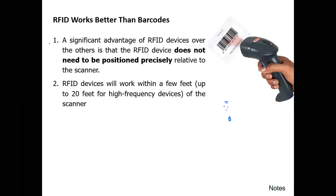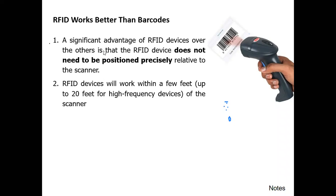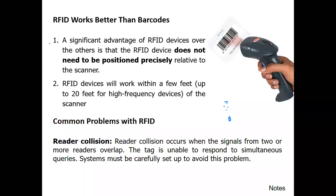RFID is better than a barcode. You know what a barcode is — parallel lines in black and white with different thicknesses, read by a barcode reader encoded with some information. RFID is better than barcode because barcode needs a line of sight — the reader and barcode must face each other. But with RFID we don't need a line of sight; we only need the tag to be within the range of the reader, which can be up to 20 feet.